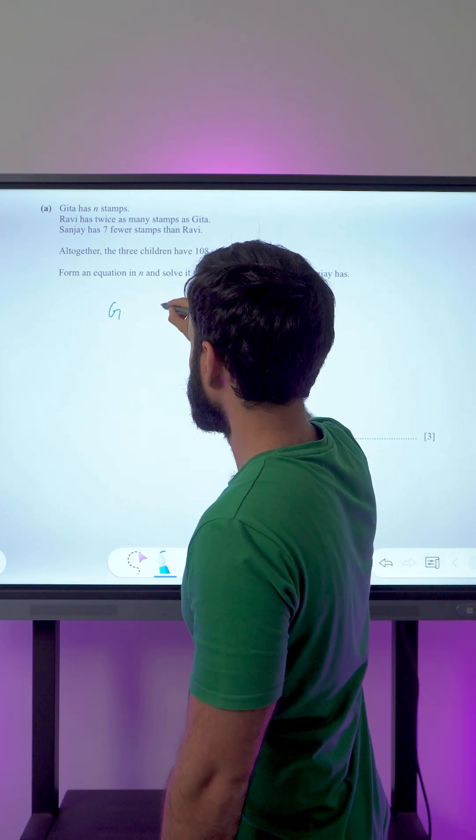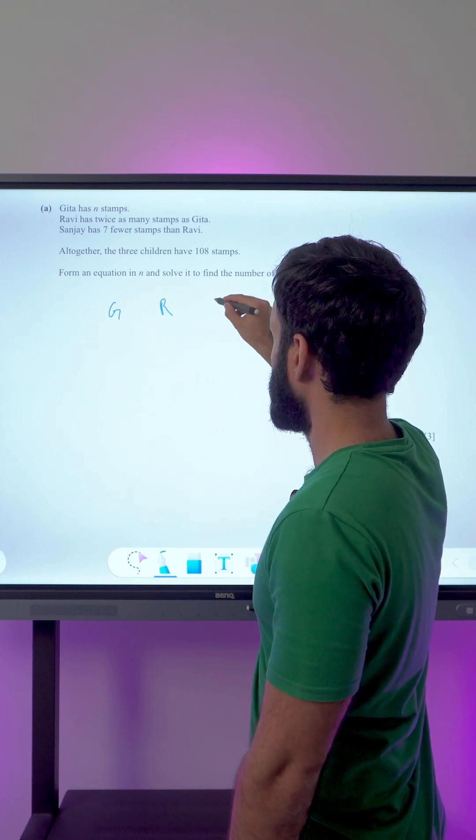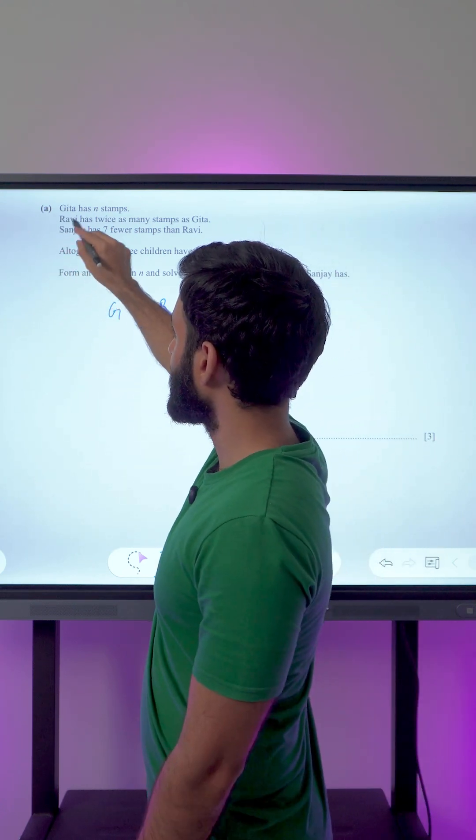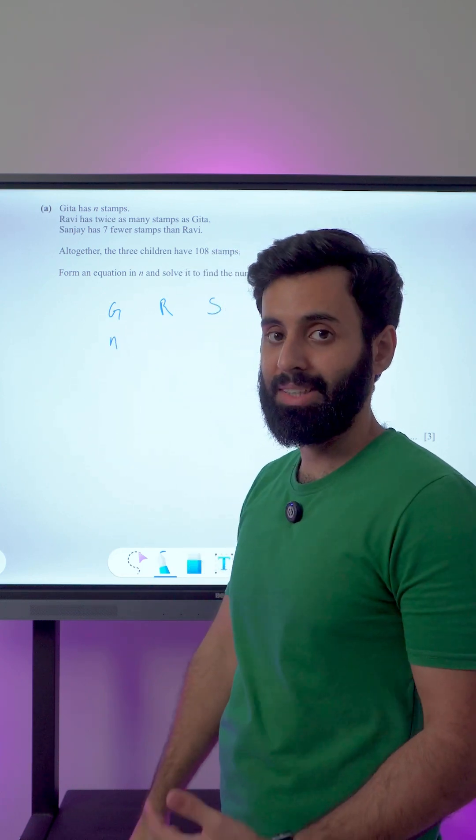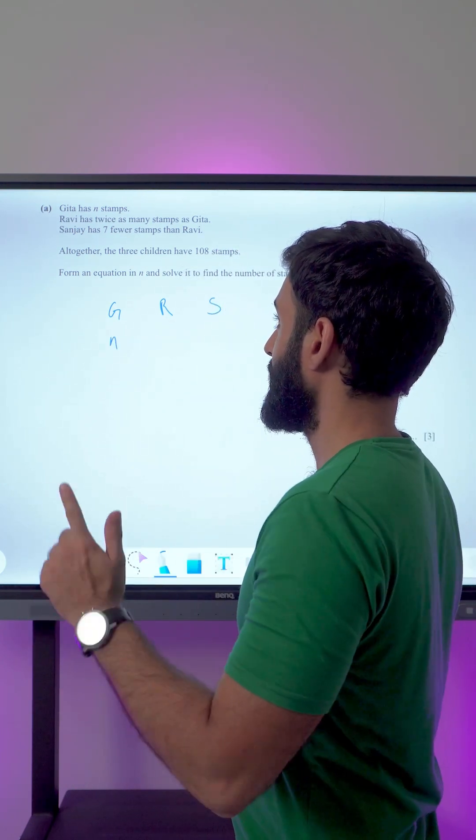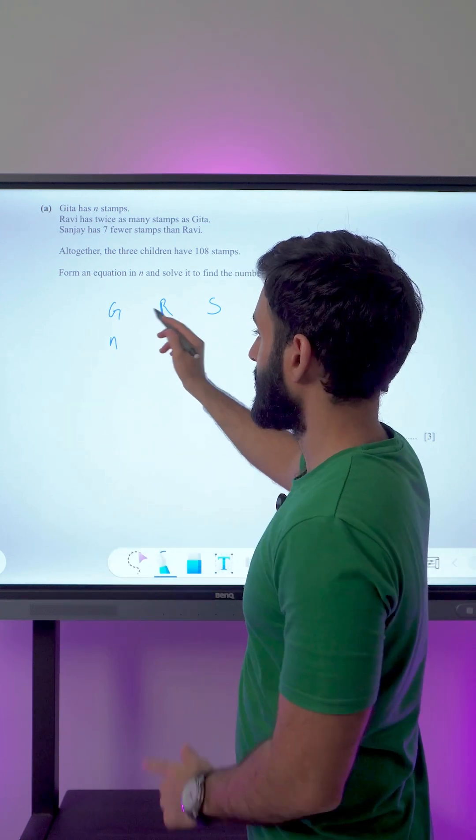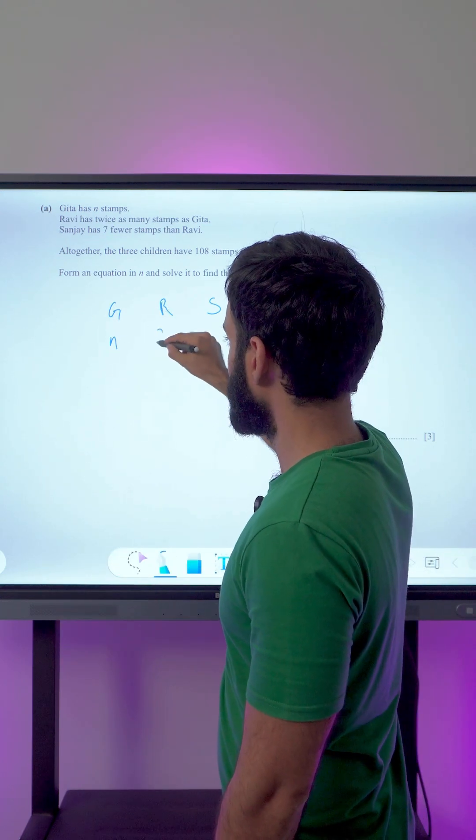Let's make a list. So we have Geeta, I'm just gonna use their initials, Ravi, and Sanjay. Okay, so Geeta has n stamps, so that means in terms of n the number of stamps that Geeta has is n. Ravi has twice as many stamps as Geeta, so that means if Geeta has n, Ravi has twice as many as Geeta, so that's gonna be 2n.